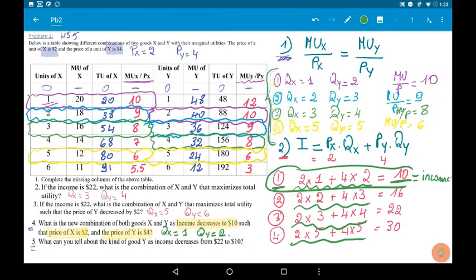Let's move on to question 5. What can you tell about the kind of good Y as income decreases from $22 to $10? So, income decreased from $22 to $10.